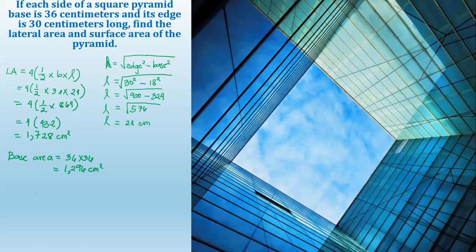Surface area of a square pyramid is equal to lateral area plus base area. Lateral area, we have 1,728 centimeters squared, plus the base area, 1,296 centimeters squared, equals 3,024 centimeters squared.